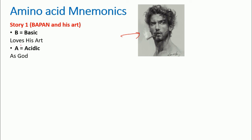So it says: 'Bapan loves his art as God.' This includes all the basic amino acids — Lysine (Lys), Histidine (His), Arginine (Arg). The capital letters signify the start letter of the three-letter code of the amino acid. For acidic amino acids, 'as God' gives us Aspartic acid (Asp) and Glutamic acid (Glu). Just by knowing 'Bapan loves his art as God,' you know all the basic and acidic amino acids.